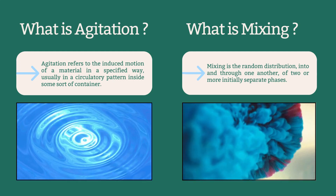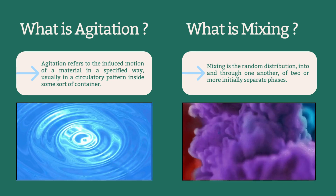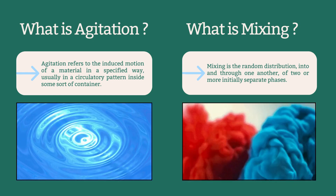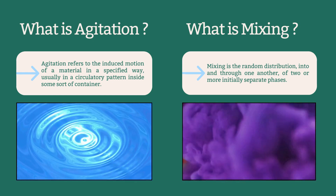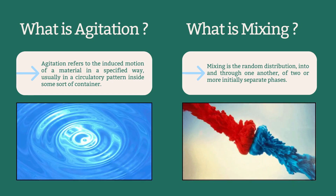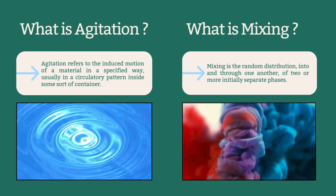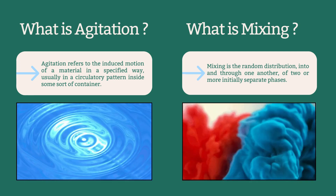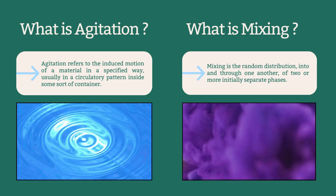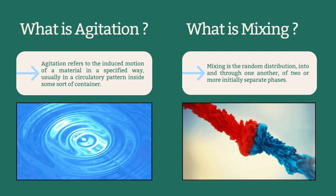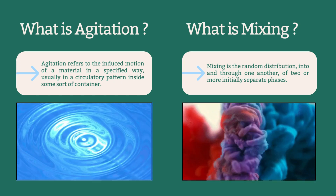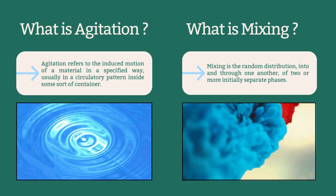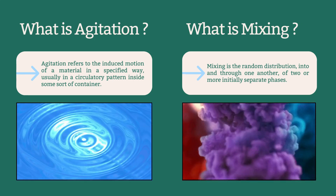Now let's talk about what is mixing. Imagine that you are making a fruit smoothie — you are mixing various fruits, yogurt, and perhaps some ice to create a delicious well-blended beverage. This is a classic example of mixing. Normally, mixing involves the random distribution of two or more initially separated phases into and through one another. In simple terms, it is a process of blending different substances together.